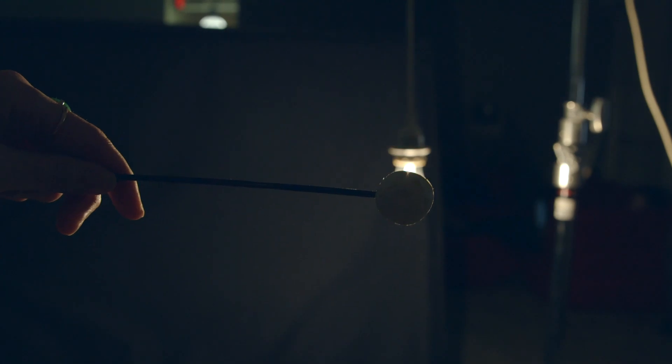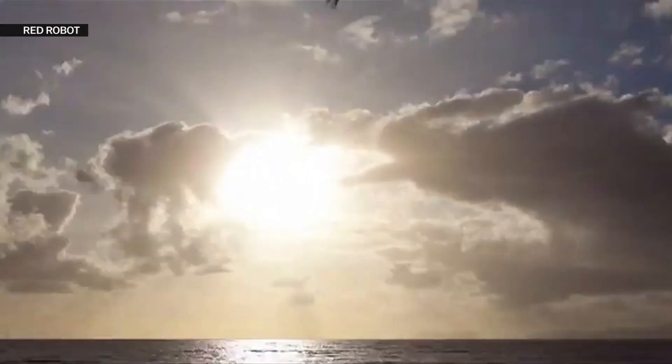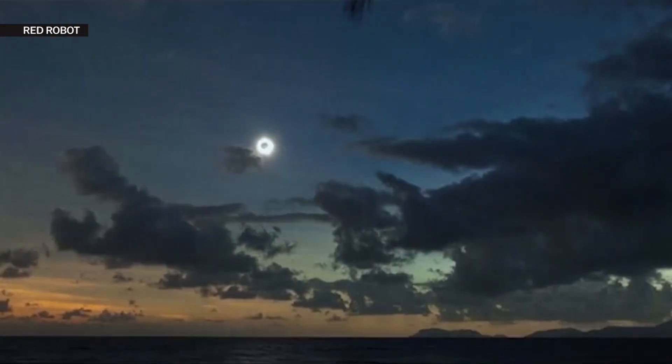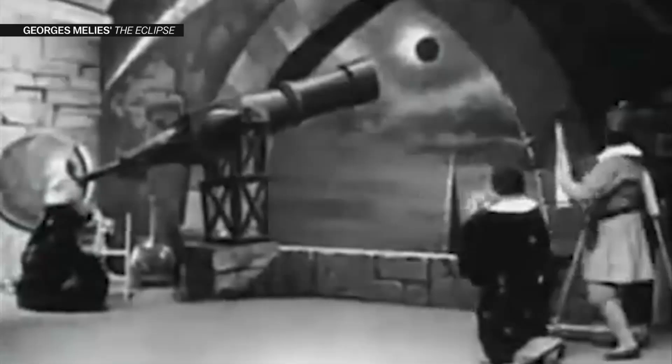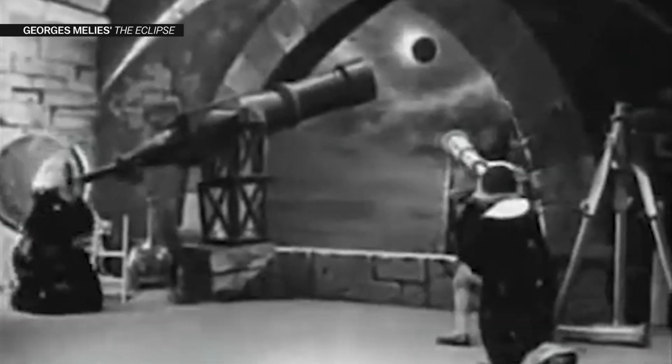In a total solar eclipse, the moon completely covers the sun from the vantage point of some place on Earth. This is possible because by coincidence, the sun and the moon appear to be the same size in our sky. While the sun is 400 times bigger than the moon, it's also 400 times farther away.